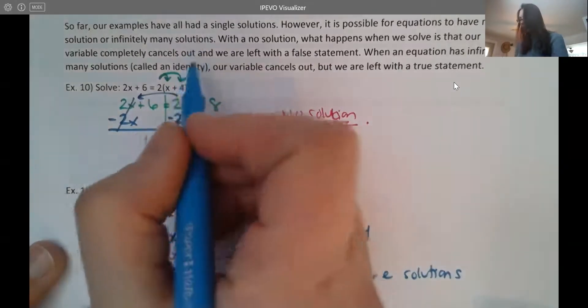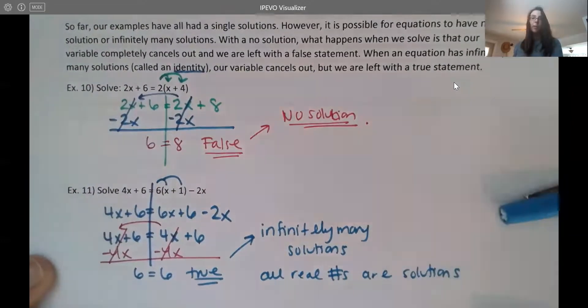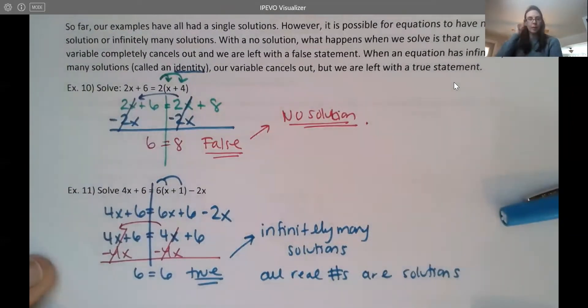We actually have a name for it. Your book doesn't really go into it in detail, but it's called an identity. So if you've heard of that before, it's the same thing. So we call these identities, which mean that every single answer is a solution.